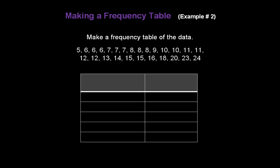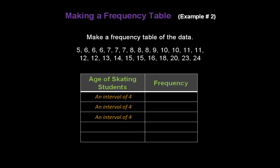Here's our blank frequency table. The first column heading is the ages of ice skating students, and the second column is frequency. Every row will be an interval of four. The youngest age is five, so we start with five to eight — that's an interval of four, counting five, six, seven, eight. For the next interval, add four to each number: five plus four is nine, eight plus four is twelve, so the next interval is nine to twelve. We continue adding four for the remaining rows.